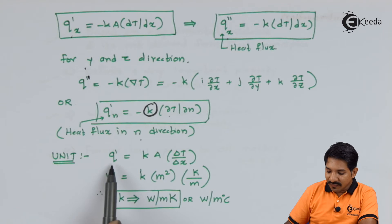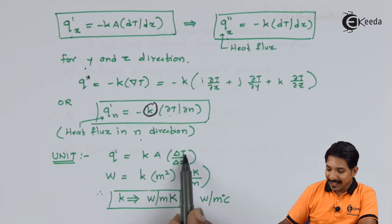So if I write the same equation and substitute the basic units, what we have is the unit for Q' which is the rate of heat transfer can be written as W. Then the unit of A is meter square. The unit of delta T is Kelvin. The unit of delta x is meter.